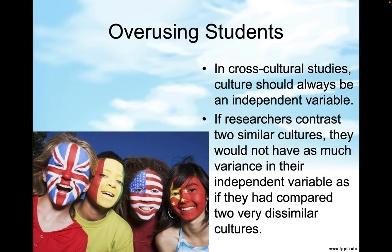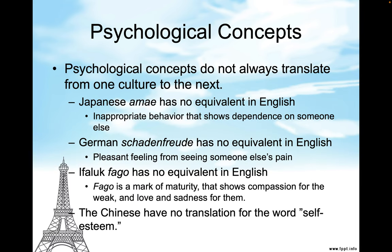In cross-cultural studies, culture should always be an independent variable. If researchers contrast two similar cultures, they would not have as much variance in their independent variable as if they had compared two very dissimilar cultures. Psychological concepts do not always translate from one culture to the next. Japanese 'amae' — inappropriate behavior that shows dependence on someone else — has no equivalent in English.